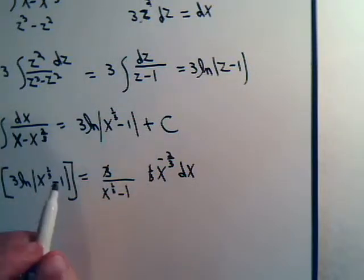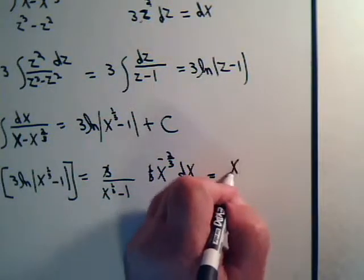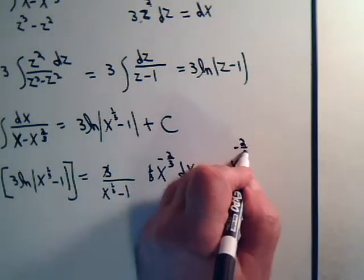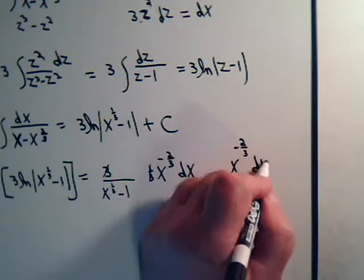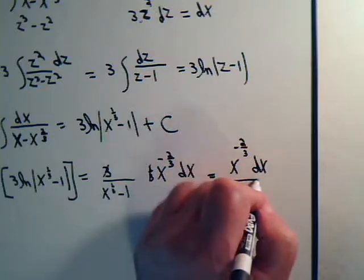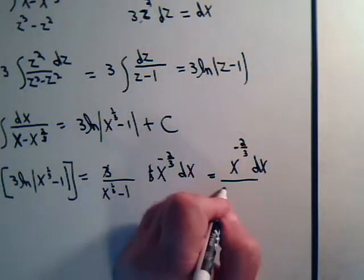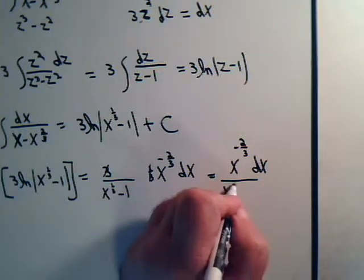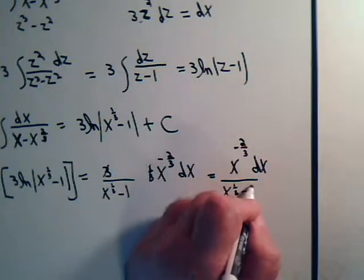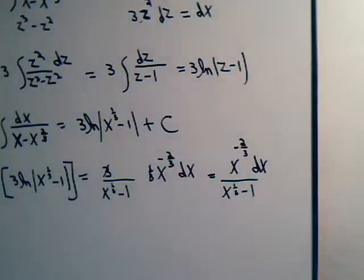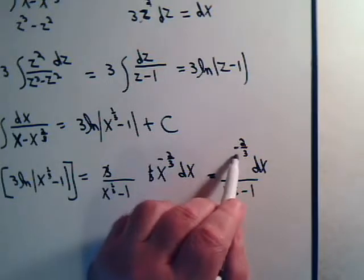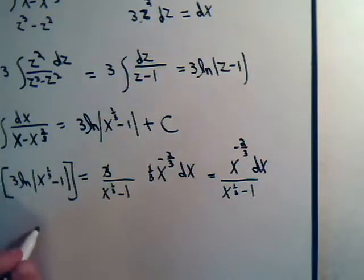So we have x to the minus two-thirds dx divided by x to the one-third minus 1. And let's divide everything by x to the minus two-thirds. That will equal dx.